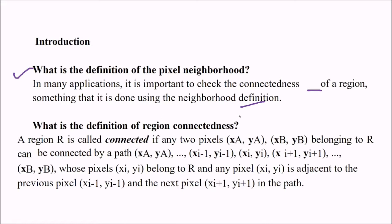What is the definition of region connectedness? A region R is connected if any two pixels (xa, ya) and (xb, yb) belonging to R can be connected by a path (xa, ya), (xi-1, yi-1) till (xb, yb), whose pixels (xi, yi) belong to R and any pixel (xi, yi) is adjacent to the previous pixel (xi-1, yi-1) and the next pixel (xi+1, yi+1) in the path.